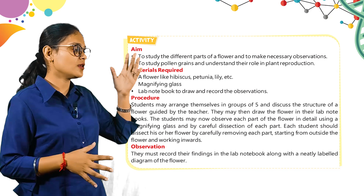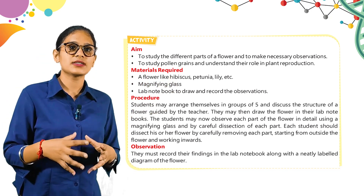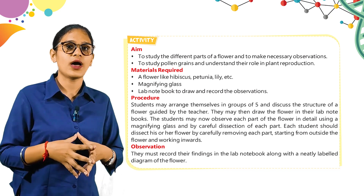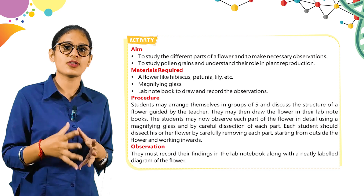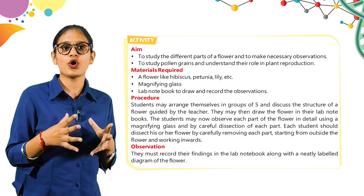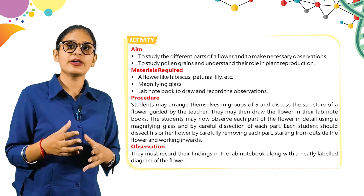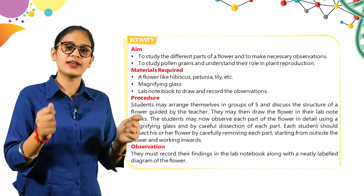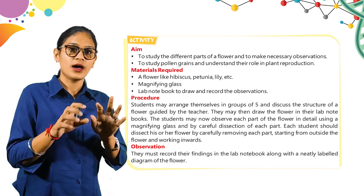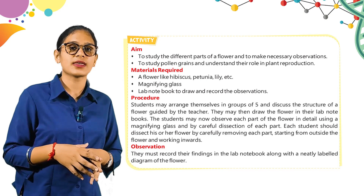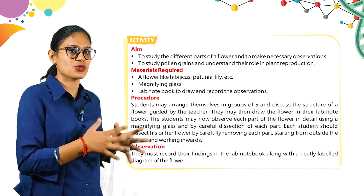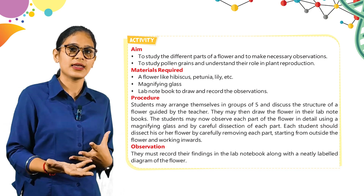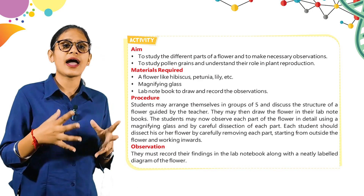For the procedure: students may arrange themselves in groups of 5 and discuss the structure of flowers guided by the teacher. They may then draw the flowers in their lab notebooks. Students should observe each part of the flower in detail using a magnifying glass and by careful dissection of each part, starting from outside the flower and working inward. You have taken some flowers and must dissect them; if you use the magnifying glass, you will observe something new. Record your findings in the lab notebook along with neatly labeled diagrams.